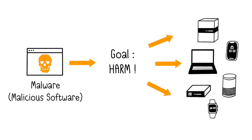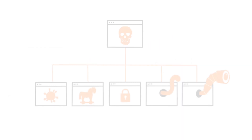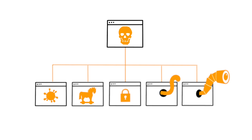The term malware is a contraction of the words malicious and software. Therefore, malware is software whose main objective is to cause harm. It targets various types of computer systems, including computers, servers, smartphones, network equipment, or any connected devices. There are different types of malware, each with different modes of operation and malicious objectives.